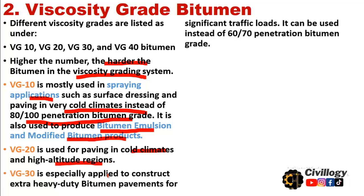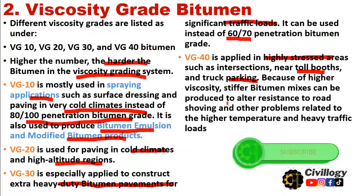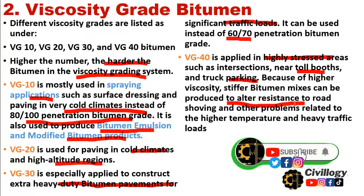VG30 is specially applied to construct extra heavy-duty bitumen pavements for significant traffic loads. It can be used instead of 60/70 penetration bitumen grade. VG40 is applied in highly stressed areas such as intersections near toll booths and truck parkings. Because of higher viscosity, stiffer bitumen mixes can be produced to offer resistance to road shoving and other problems related to high temperature and heavy traffic loads.